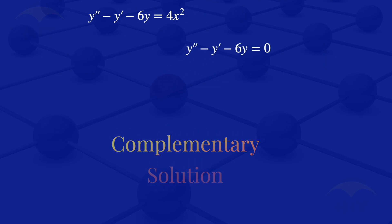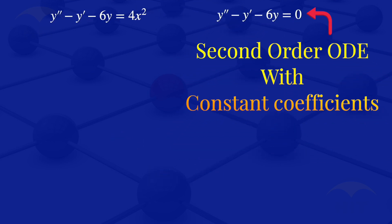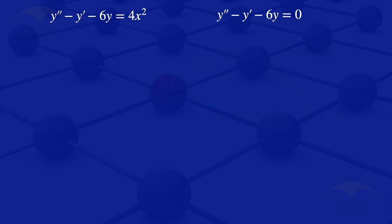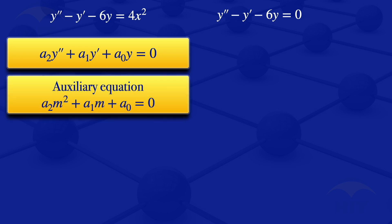To find the complementary solution, we note that this equation is a second-order ODE with constant coefficients. It is of the form a2·y prime prime plus a1·y prime plus a0·y equals 0. The auxiliary equation for equations of this form is a2·m squared plus a1·m plus a0 equals 0. By comparing these two equations, we can get the values of a0, a1, and a2.